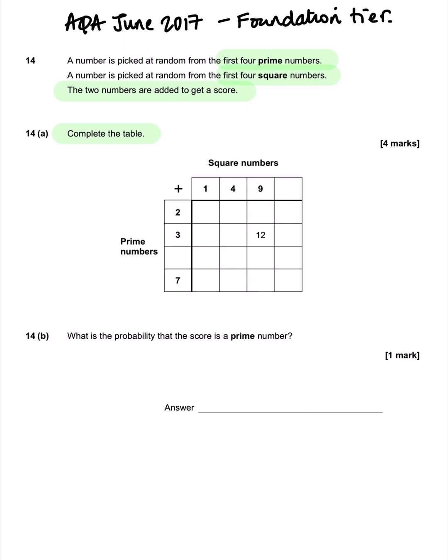In part A, it says to complete the table, and this is a GCSE question. We can see we have the square numbers along the top and then the prime numbers here. We've got some numbers missing, so we're going to fill in the missing values.